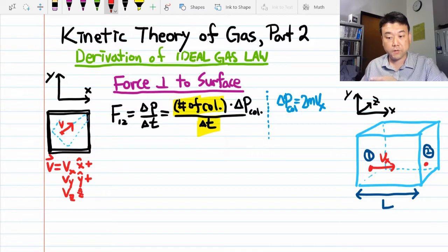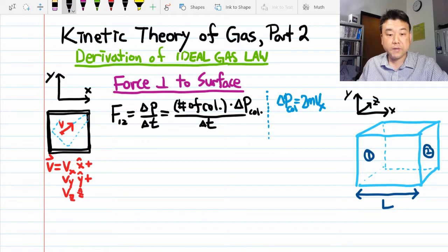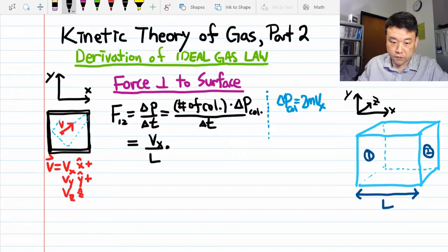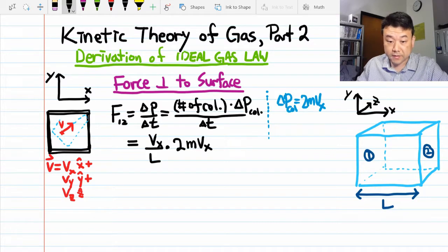So take the reciprocal of that, that's Vx over L. Let's write that down. And the change of momentum per collision. We can simplify this a little bit.